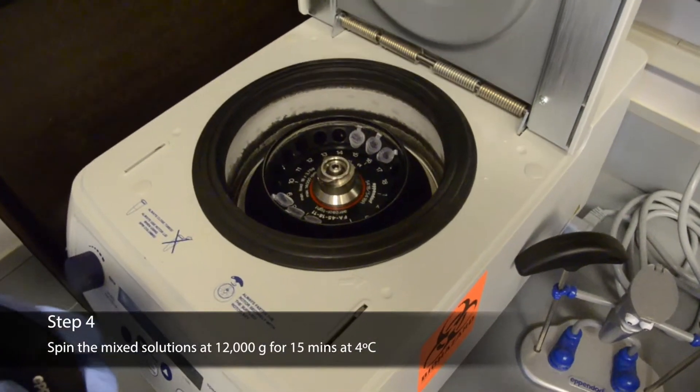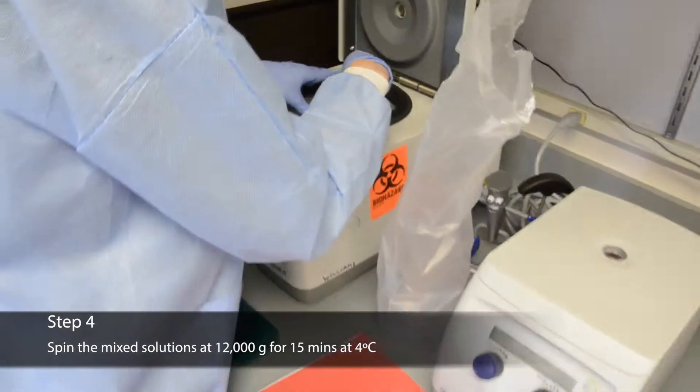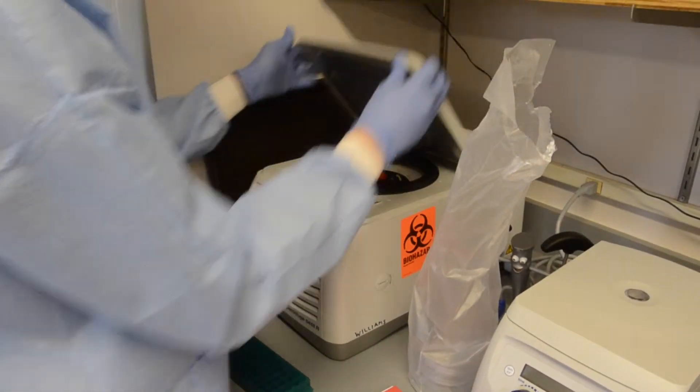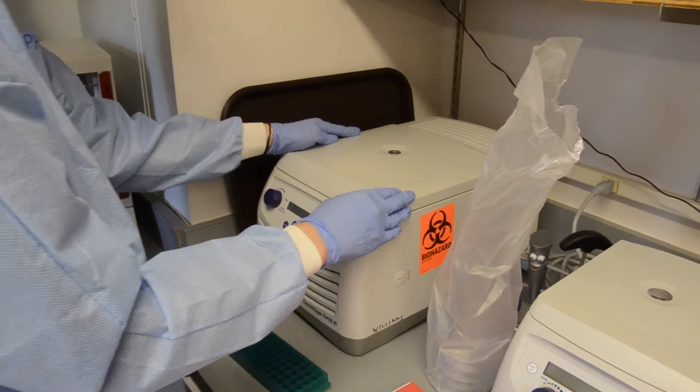Spin the mixed solutions at 12,000 g for 15 minutes at 4 degrees Celsius. During the centrifugation, it could be helpful to label the rest of your tubes and columns as well as get ice.